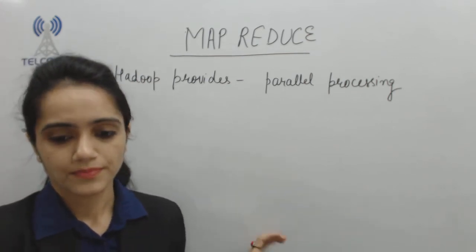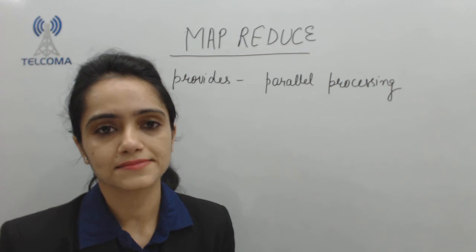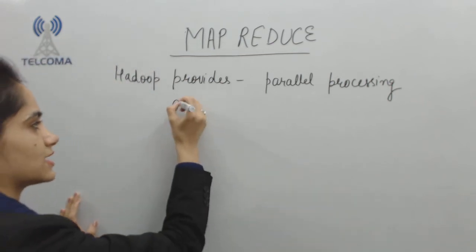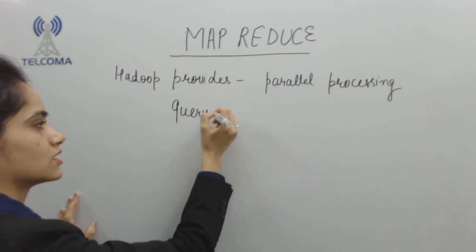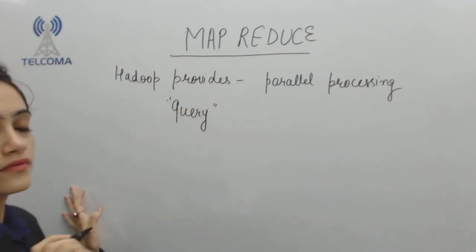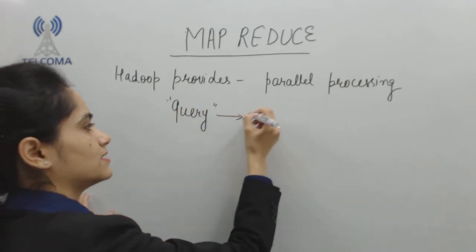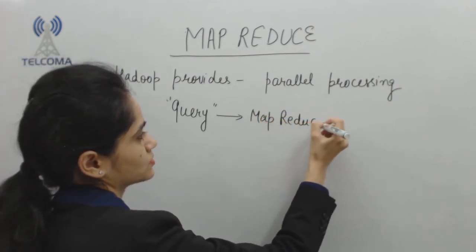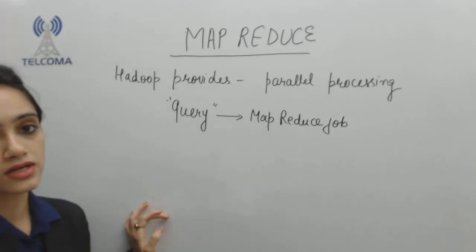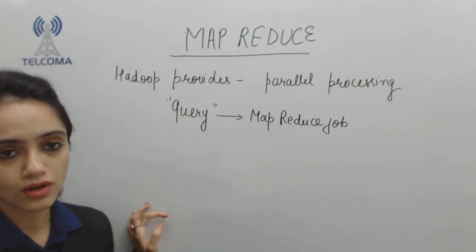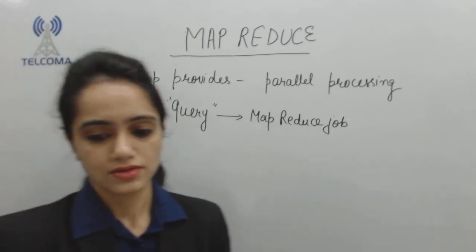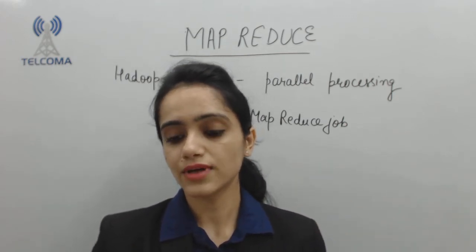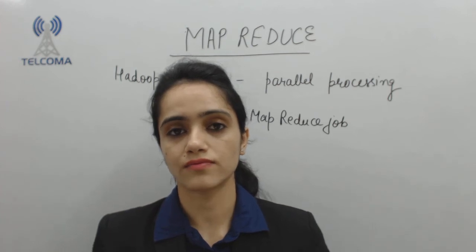To take advantage of the parallel processing that Hadoop provides, we need to express our query as a MapReduce job. Whatever information we want will be our query, and this will be expressed as a MapReduce job. After small-scale testing, we then run it on a cluster of machines.